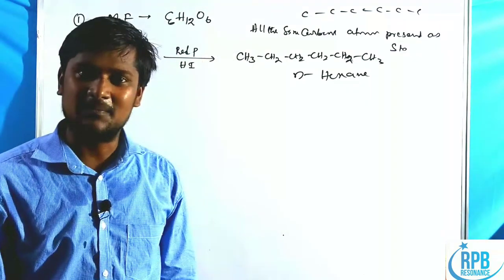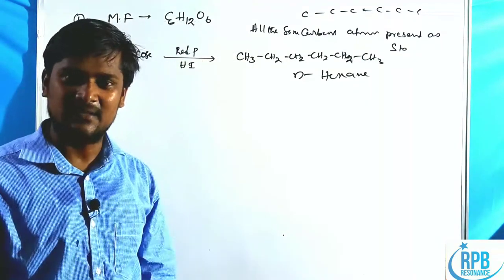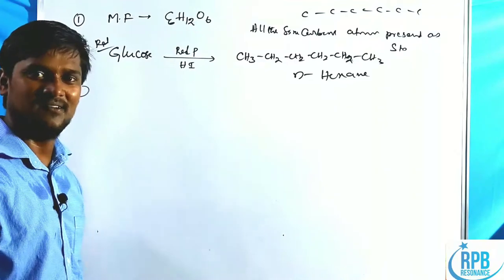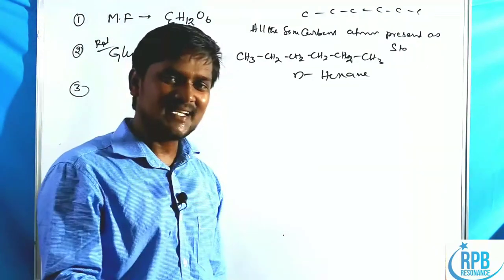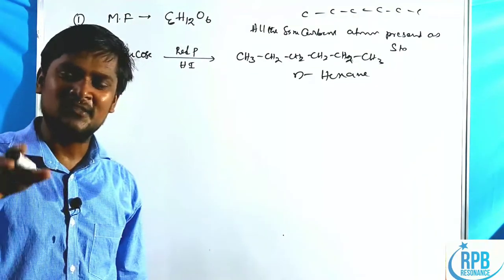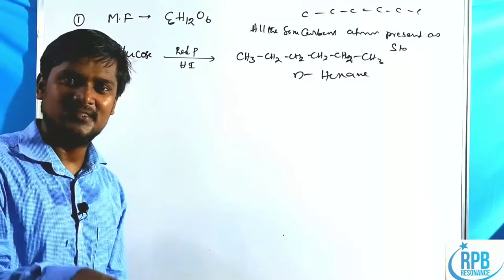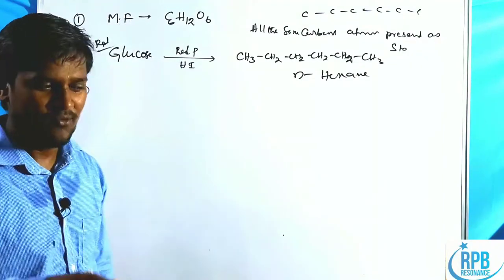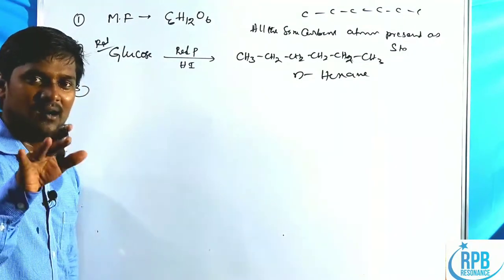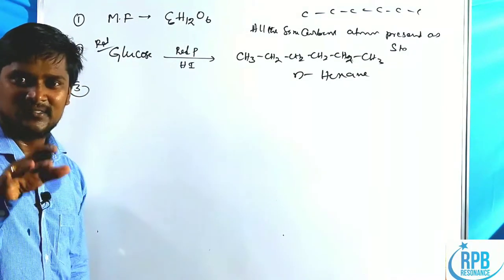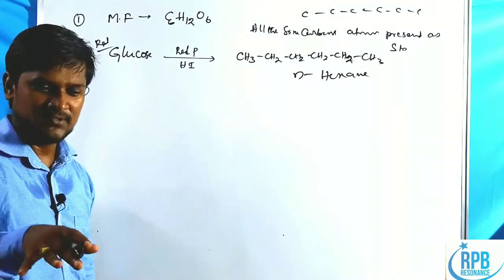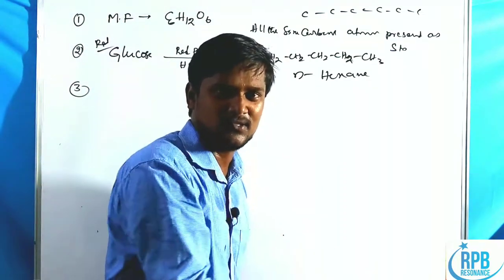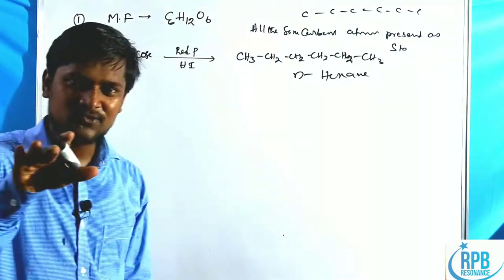We now know the six carbons are in a straight chain, but we do not yet know the functionality of the six oxygen atoms. The oxygen atoms could be in the form of alcohols, ethers, carbonyl compounds, or carboxylic acids.